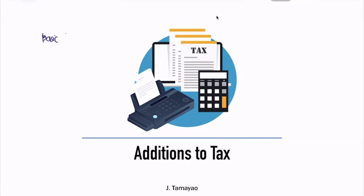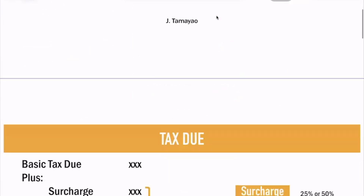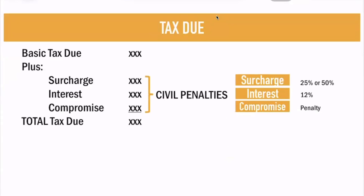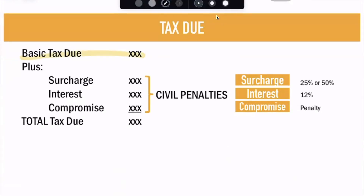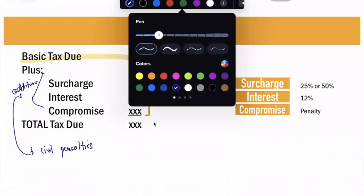We have a basic tax, and then we add additions to tax. What we need to learn are the items on your additions to tax to get your total tax due. Your tax due is computed this way: we have your basic tax, and from your basic tax we add your additions to tax. This additions to tax is also known as your civil penalties. We have surcharge, interest, and your compromise.